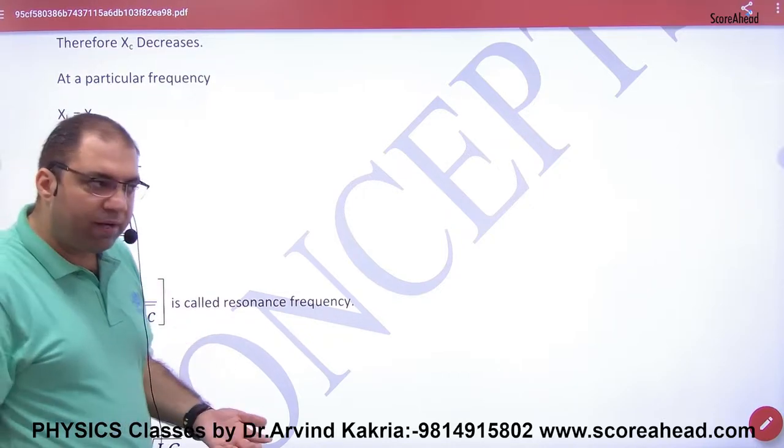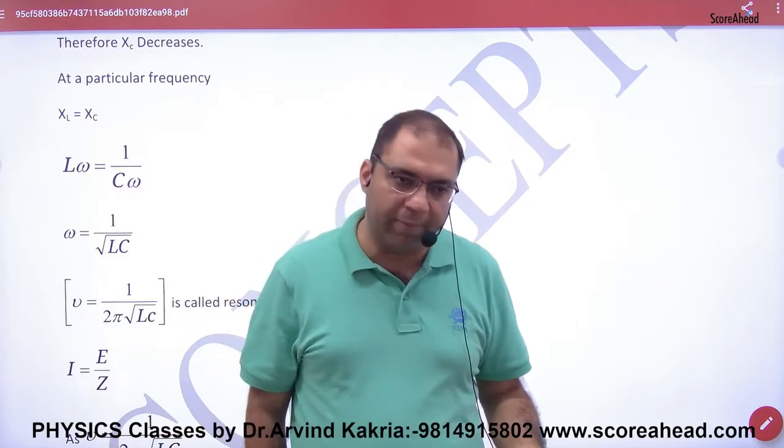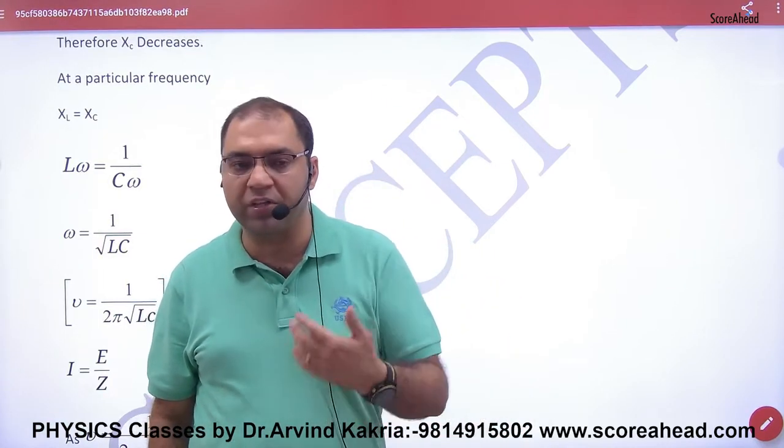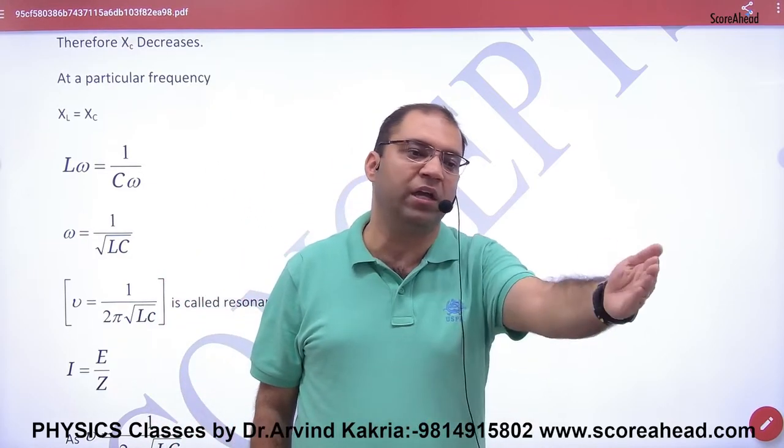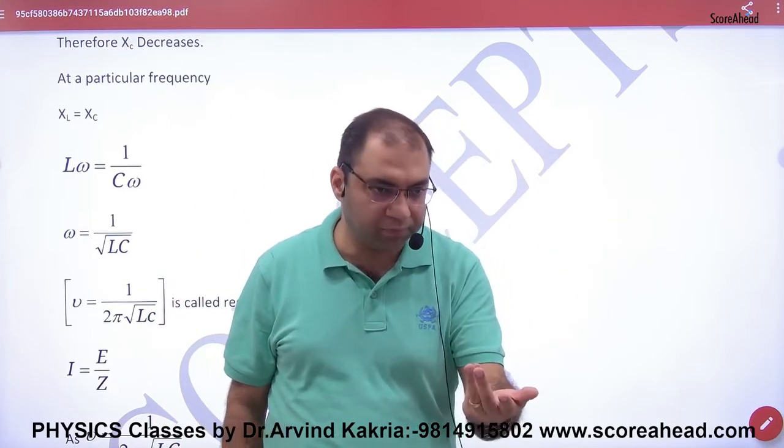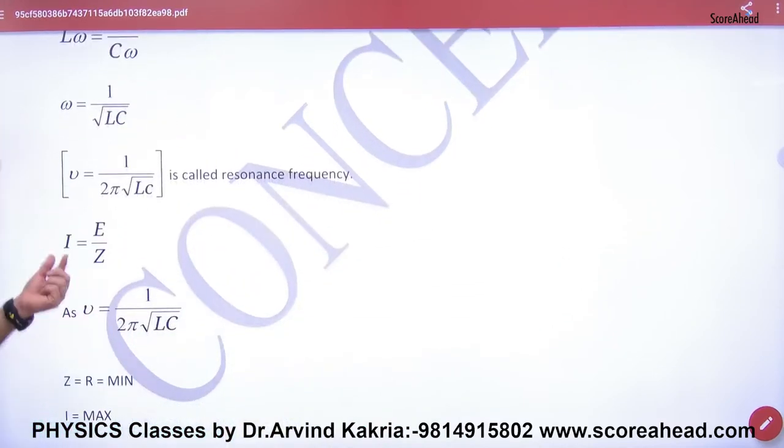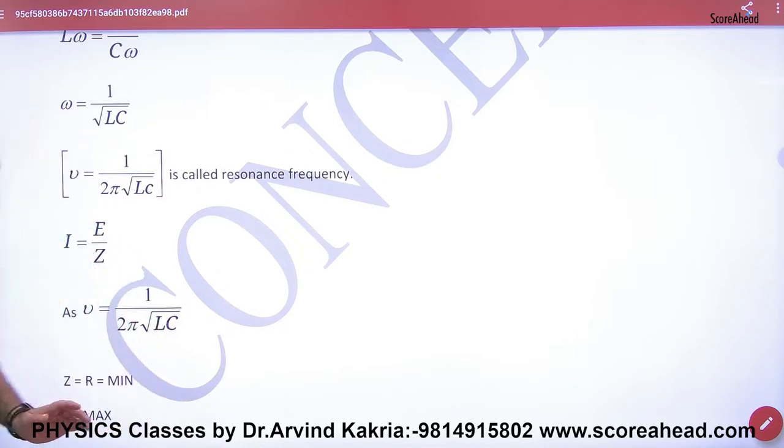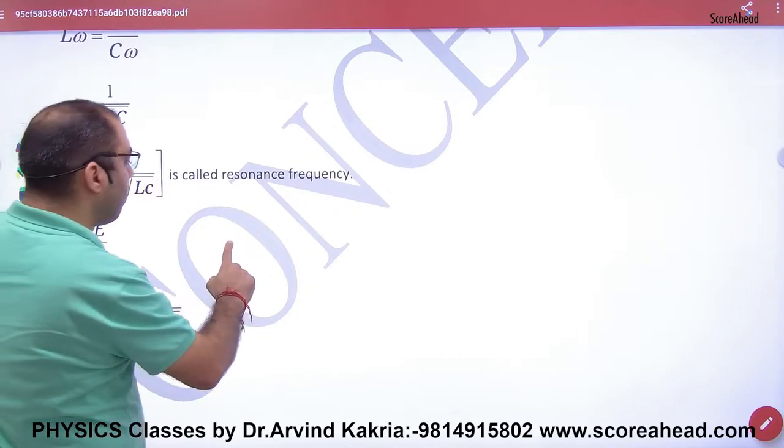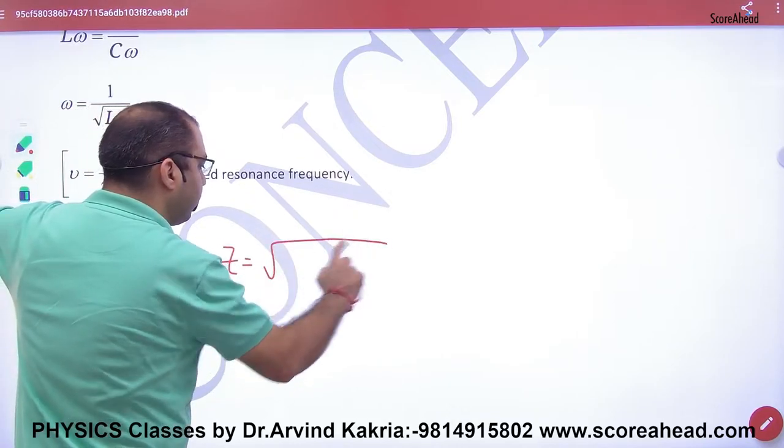In series LCR circuits at resonance frequency, when XL = XC, the current is EMF divided by total resistance. The total resistance of LCR is called impedance Z, and the formula for Z is √(R² + (XL - XC)²).